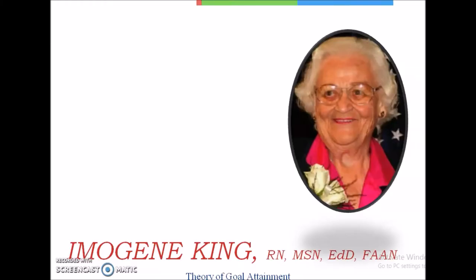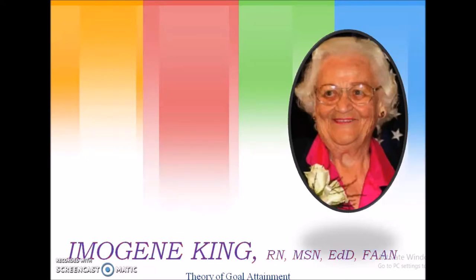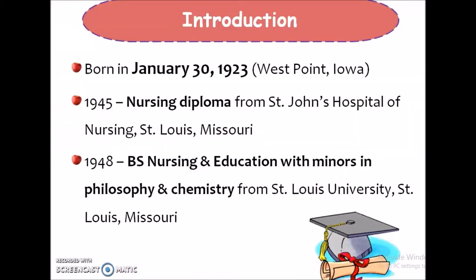In this video, we will discuss about Imogen King's Goal Attainment Theory. Coming to the introduction to the theorist, she was born on January 30, 1923 and she attained her Nursing Diploma in 1945 from St. John's Hospital of Nursing.